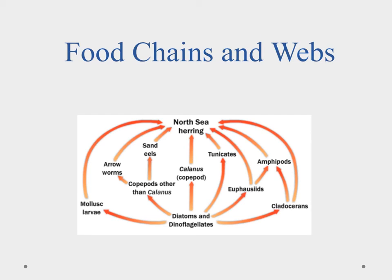The last topic is food chains and webs — a review from biology class. We start off with our photosynthetic organisms, which are then consumed by a primary consumer. A simple example: a copepod feeds on phytoplankton, and then a North Sea herring feeds on the copepod. A food chain shows a very simple, straight path of energy transfer by consumption, starting with producers and moving up through consumers.